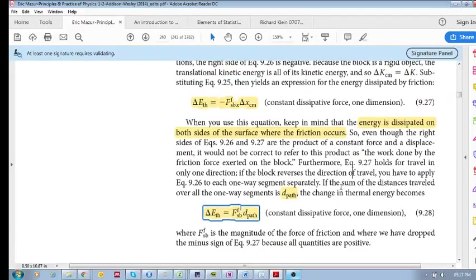So, if the sum of the distance traveled over all the one-way segments is D path, the change in thermal energy becomes ΔE_thermal is the friction force on the block times the entire path that this object moves. So, we'll do an example in the next one, and we'll see how we apply this.